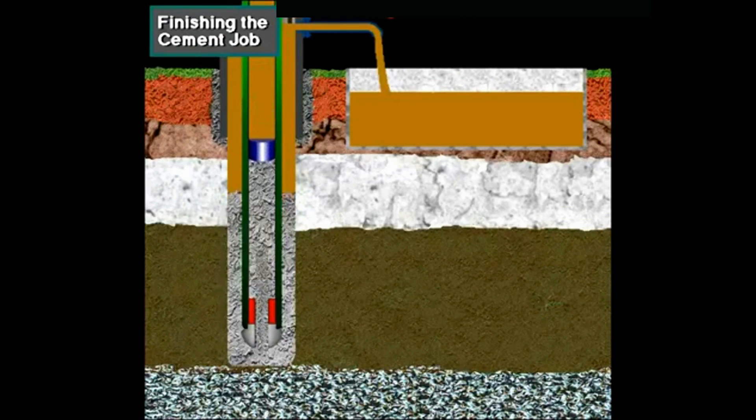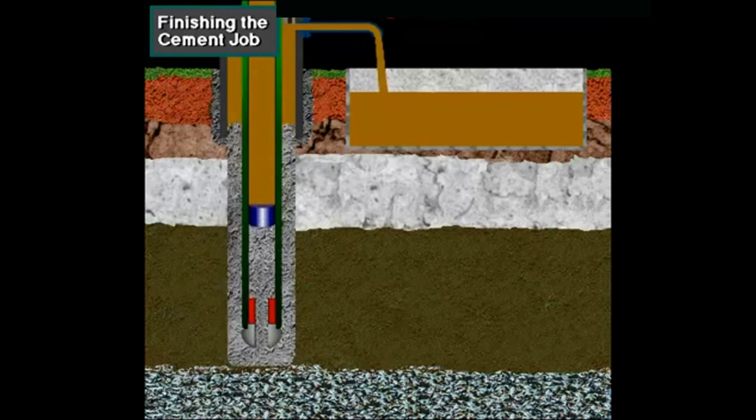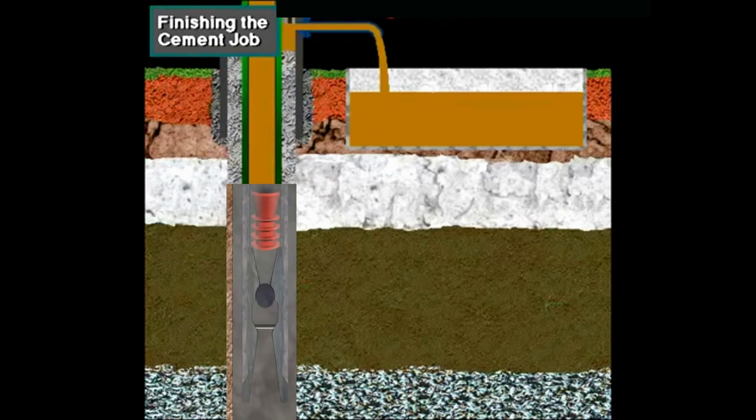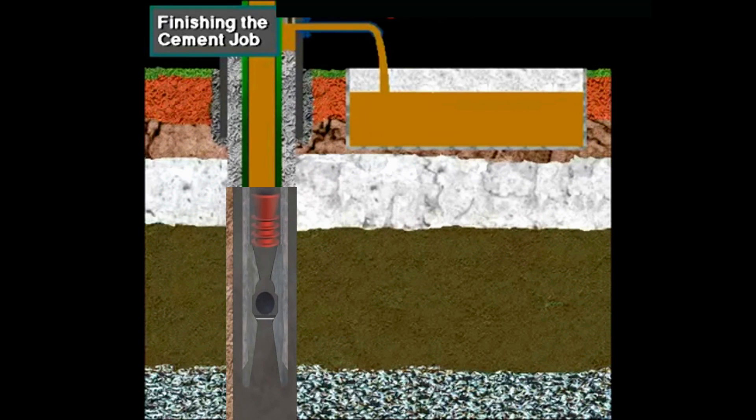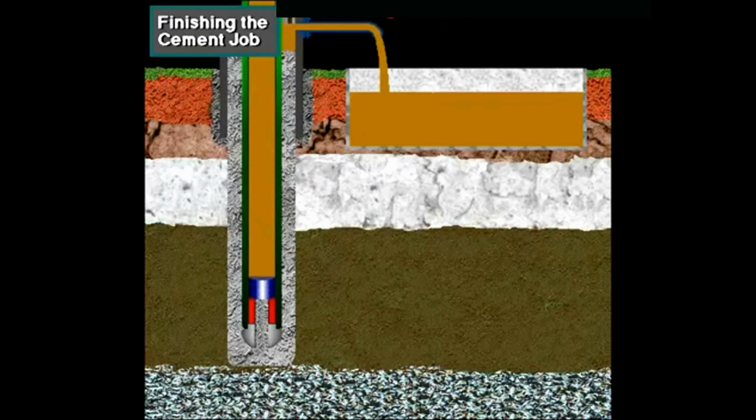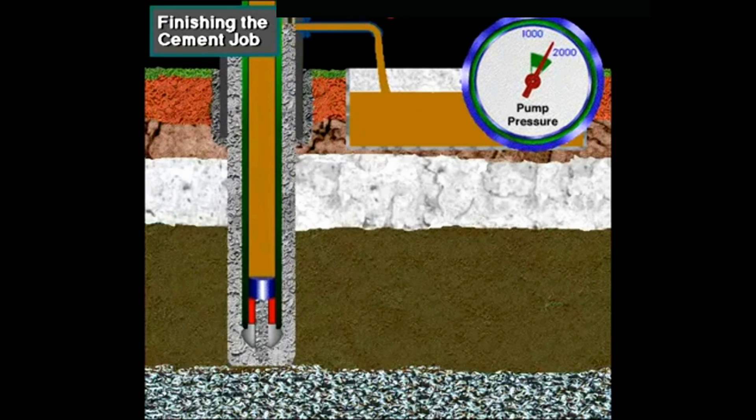Finally, the cement slurry is displaced out of the casing into the annulus. The cement job is completed when the second plug, the seal plug, lands or seats in the grooves in the float valve. This landing is signaled at the surface by a sharp pressure increase.